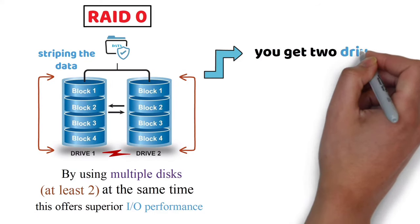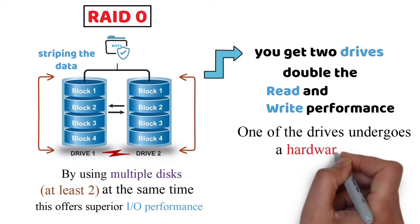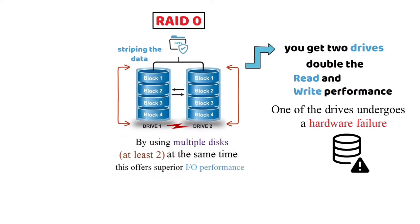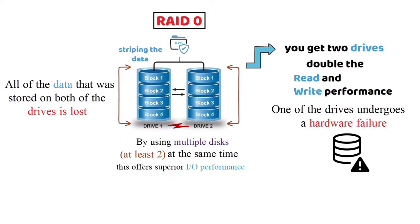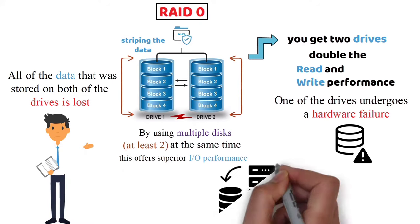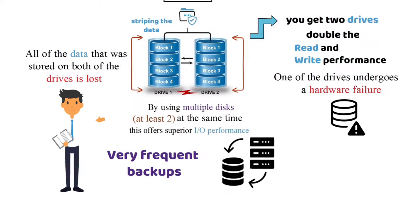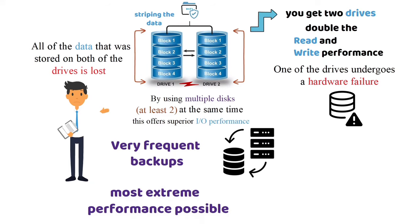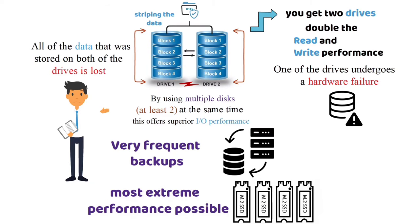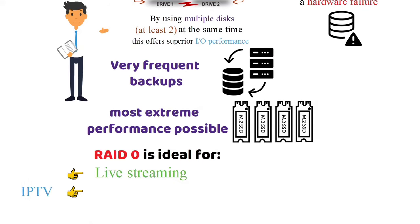This means you get two drives and double the read and write performance, but in the event that one of the drives undergoes a hardware failure, all of the data stored on both drives is lost. This configuration is only ideal if you're going to be doing very frequent backups, or if you're going for the most extreme performance possible, such as running multiple SSDs. RAID 0 is ideal for live streaming, IPTV, and VOD edge servers.